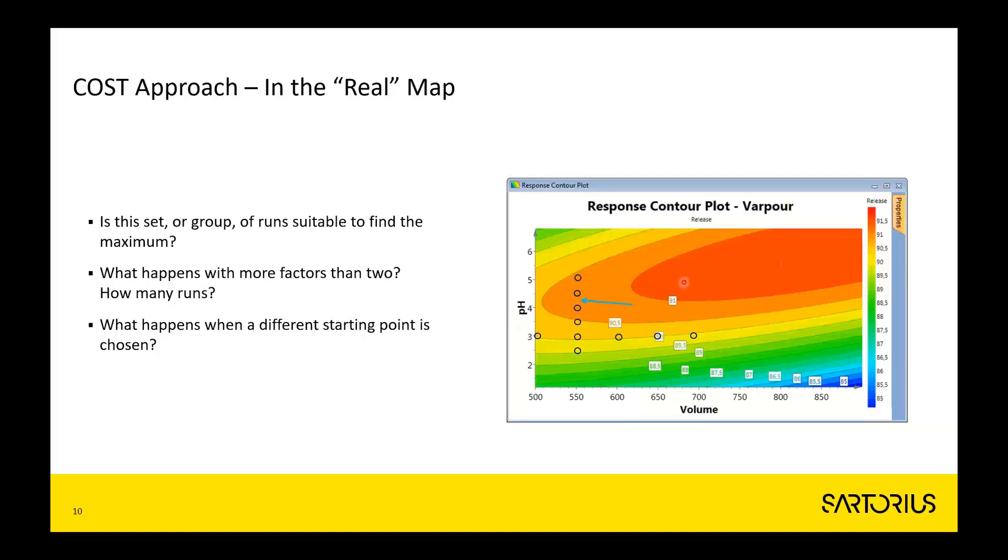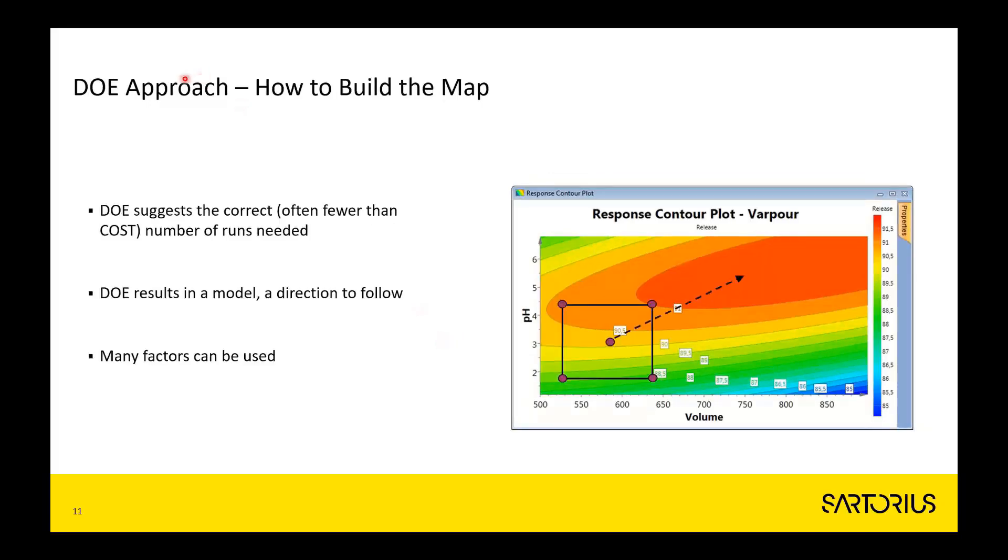And what would happen if we would have started over here by making experiments? We could have ended up in a completely different area of this map. So what to do then? If we're not supposed to do COST, what should we do? Well, what we are recommending is what we call design of experiments.